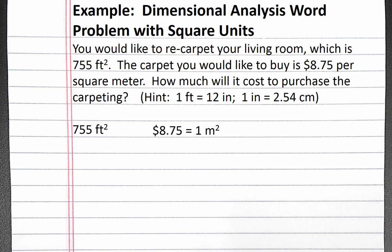Next, we'll develop a plan for our dimensional analysis. We can start with our standalone piece of information, 755 square feet, and convert this into square inches. Then we can convert from square inches into square centimeters, then convert to square meters, and finally convert to dollars.